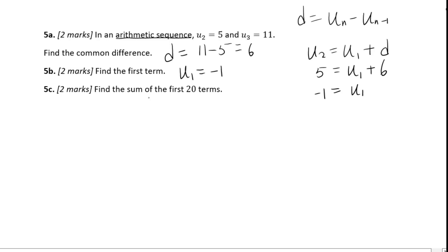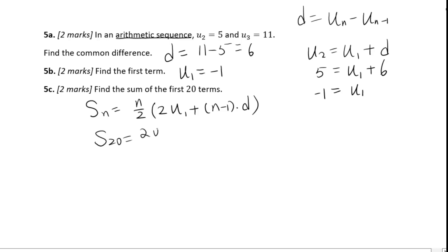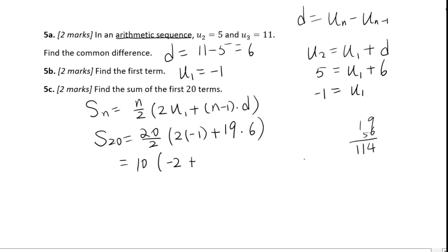For 5c, find the sum of the first 20 terms. We use the formula S_n equals n over 2 times (2U1 plus (n minus 1)d). So S20 equals 20 over 2 times (2 times negative 1 plus 19 times 6). That gives 10 times (negative 2 plus 114), which is 10 times 112, equals 1120.